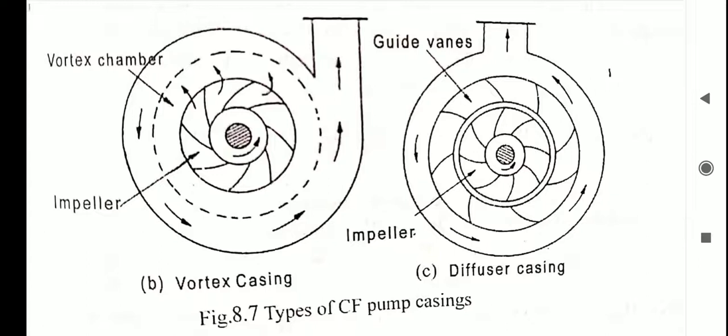Hence, the efficiency of the pump is increased compared to volute casing. This covers the vortex casing. Now we move on to diffuser casing.